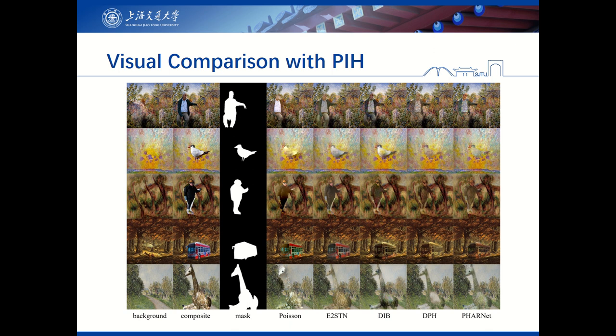The results show that prior methods have notable limitations. Some approaches can smooth the boundary between foreground and background, but the foreground content is severely distorted. DIB and E2SDN preserve the foreground content well, but the foreground style is not very close to the background style, and the harmonized foreground may be corrupted. DPH is a competitive baseline that can achieve good harmonized results in some cases; however, the content structure and foreground boundary may be damaged or blurred. In comparison, our method can preserve the content structure, sharp boundaries, and rich details, while the foreground is sufficiently stylized and harmonious with the background.